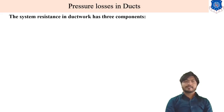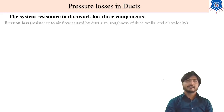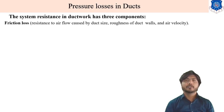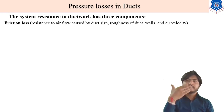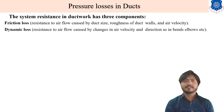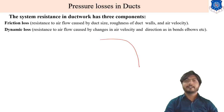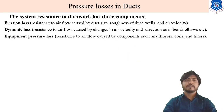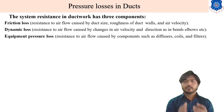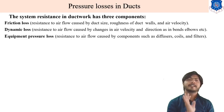There are three types of pressure losses in duct work: first, friction losses — resistance to airflow caused by duct size, roughness of the duct wall, and air velocity. Second, dynamic losses — resistance caused by changing air velocity or direction, such as at bends. Third, equipment pressure loss — resistance caused by components such as diffusers, coils, and filters.